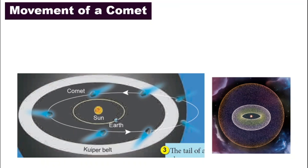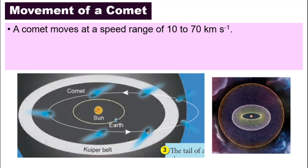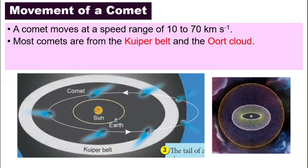Let's move to comet. Comets actually move at a speed that ranges from about 10 to 70 kilometers per second. Where do comets come from? We know that a lot of asteroids come from the asteroid belt. Comets actually come from the Kuiper Belt and the Oort Cloud.